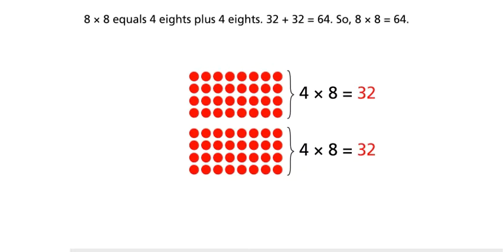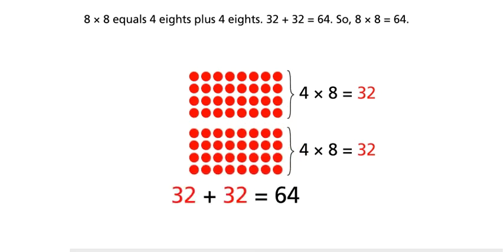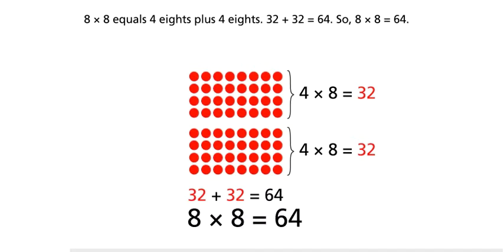8 times 8 equals 4 8's plus 4 8's. 32 plus 32 equals 64. So, 8 times 8 equals 64.